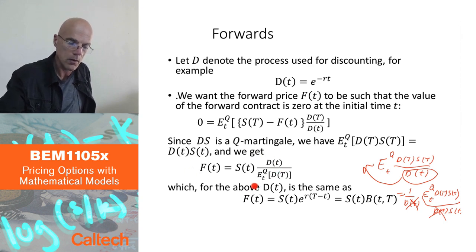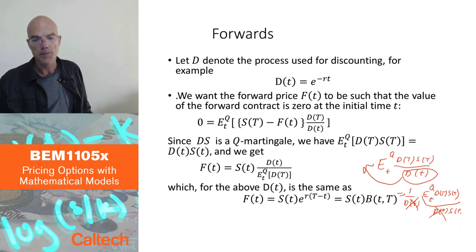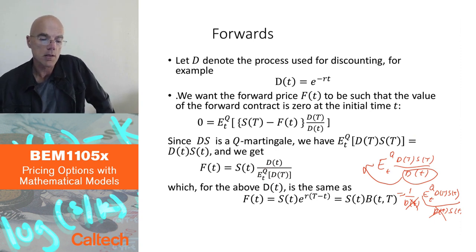So this is now a general formula that I get for my forward contract. It's the initial stock price times the initial discount factor over the expectation under the Martingale property of the future discount factor at maturity.